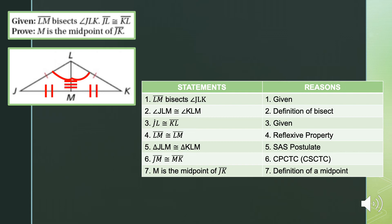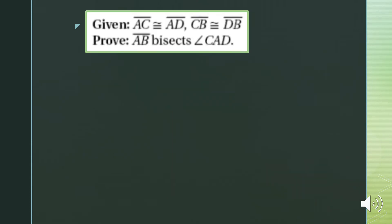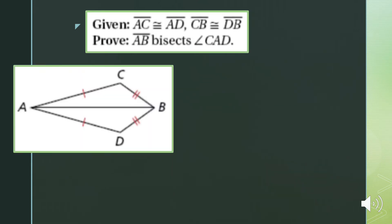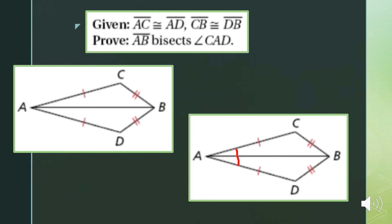Therefore, M is the midpoint of line segment JK by the definition of a midpoint. QED. Problem number four. We were given that line segment AC is congruent to line segment AD, and line segment CB is congruent to line segment DB. We have to prove that line segment AB bisects angle CAD, which means we first prove that angle CAB is congruent to angle DAB. We can prove the two triangles are congruent by the SSS postulate because AB is congruent to itself.